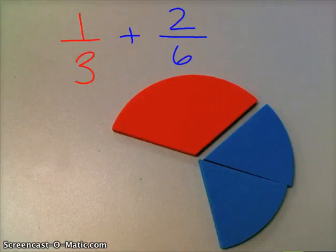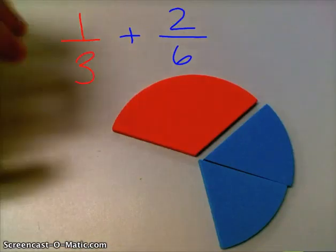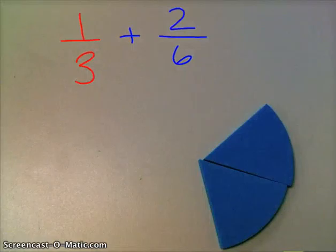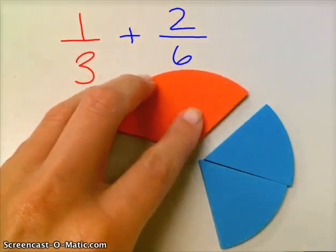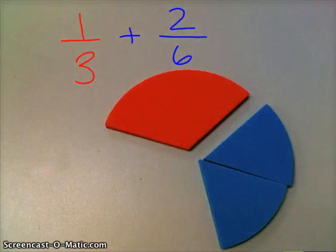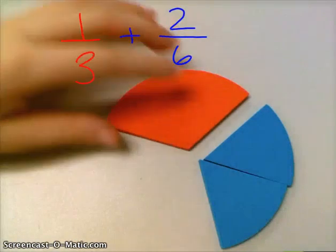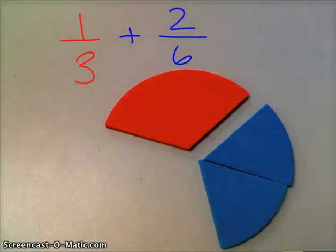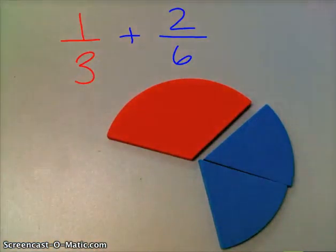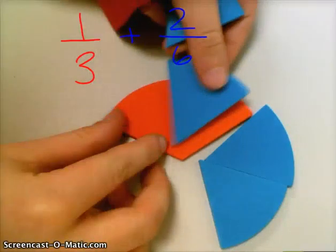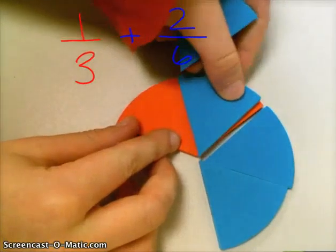Alright, since we have to add the same size pieces, let's go ahead and make everything six pieces. We already have two-sixths, so let's go ahead and make our third piece into six. Go ahead and do that, just put it over there, put it over it, so we can see the third. So make that one-third piece into six. You can put it over the third piece, so you can see that they're equivalent.